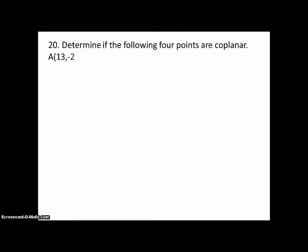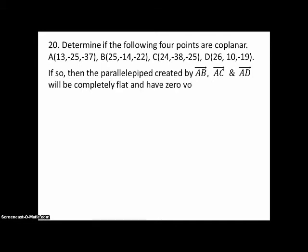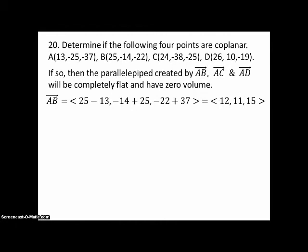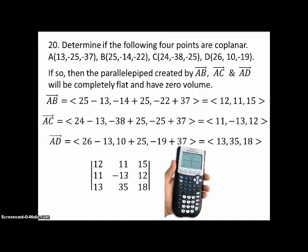Number 20, determine if the following four points are coplanar. There's A, there's B, there's C, and there's D with ridiculously big numbers. If so, if they are in the same plane, then the parallelepiped created by any vectors in the plane would be completely flat, and therefore have zero volume. So, what we're going to do is compute these three vectors. And again, you can use any combinations. And then compute the volume of the parallelepiped, and if it turns out to be zero, then we know the points are coplanar, and if not, they're not coplanar. So, there's AB, there's AC, and there's AD. So, our determinant looks like this. Now, those numbers are awfully big. I don't really want to do that by hand. So, let's take a look at how we would do it on the calculator.